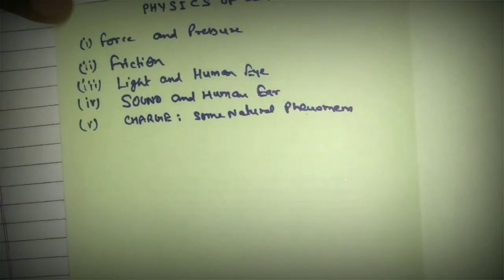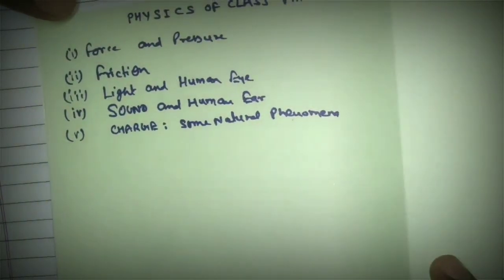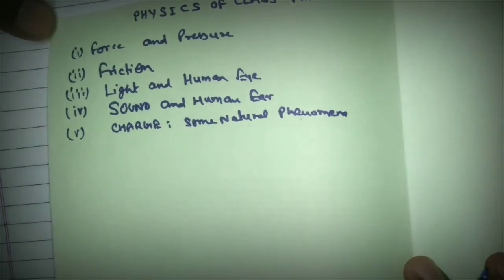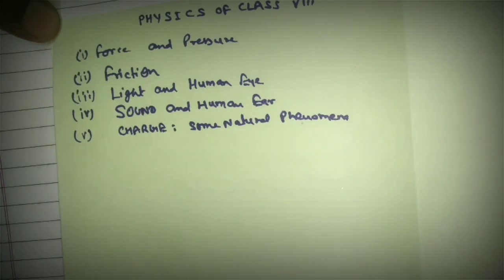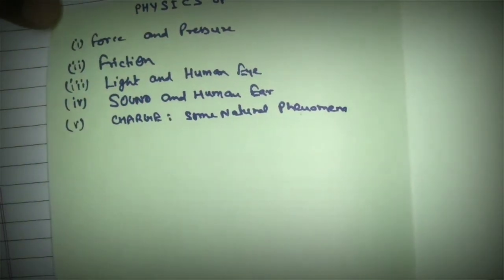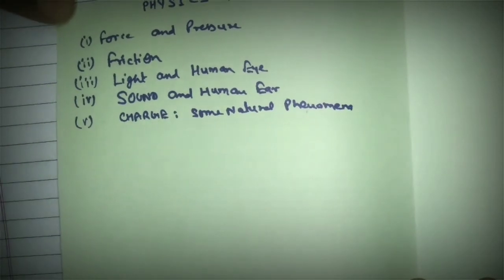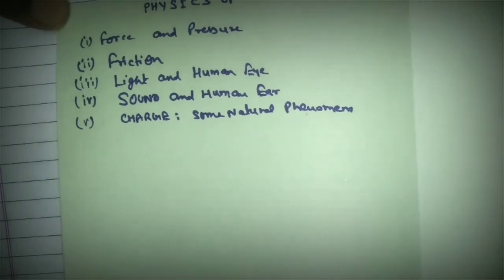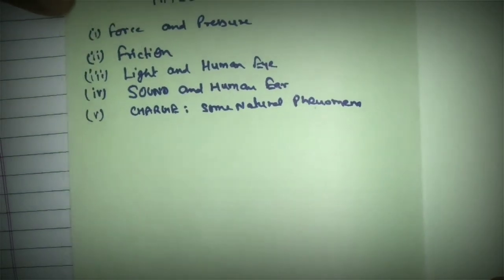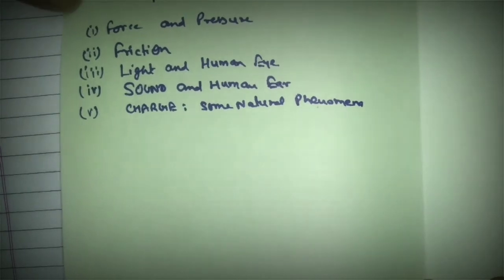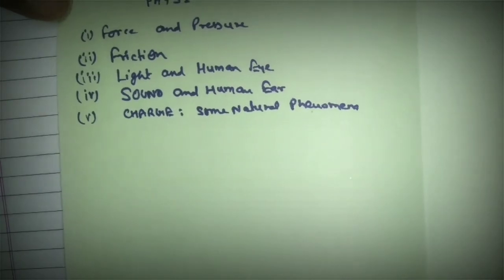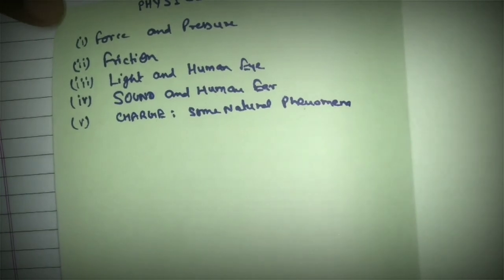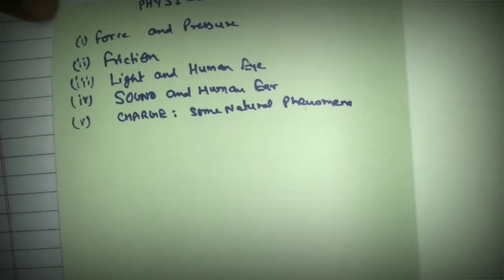In the second part of this chapter we discuss about the earthquake phenomenon and the basic theory called plate tectonic theory, which explains the formation of an earthquake. We then discuss the different waves released during an earthquake, commonly known as seismic waves, and the Richter scale which is used to measure the intensity of an earthquake, along with seismometer and seismograph.